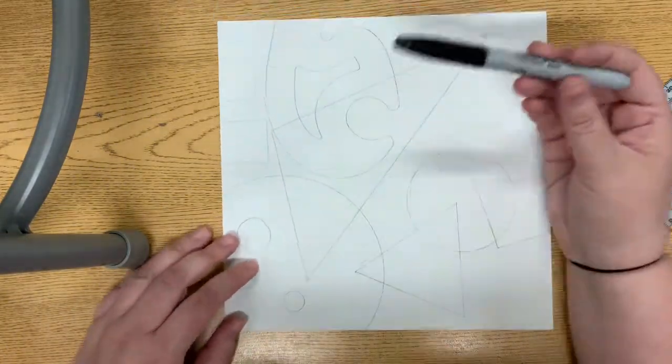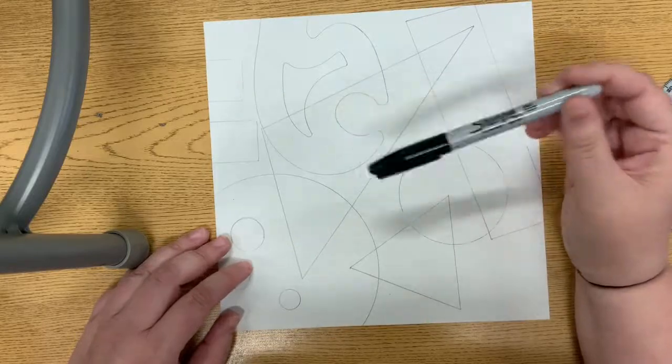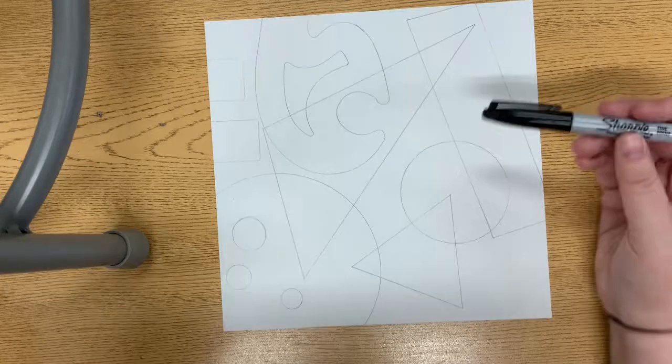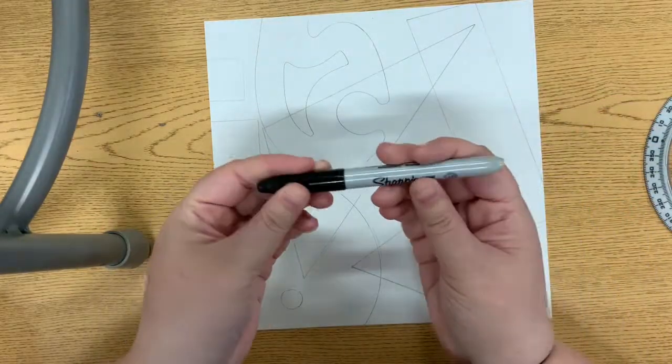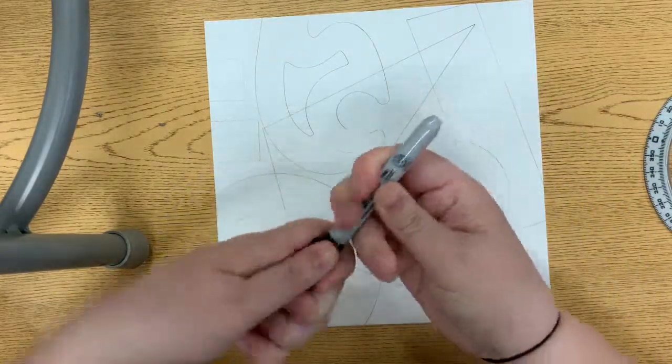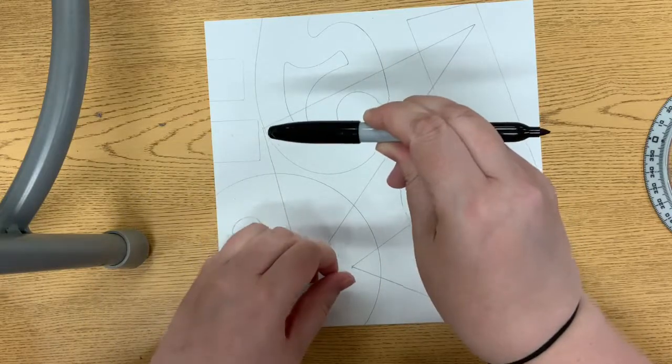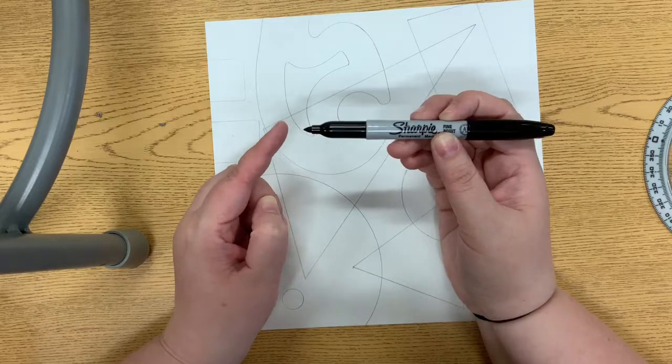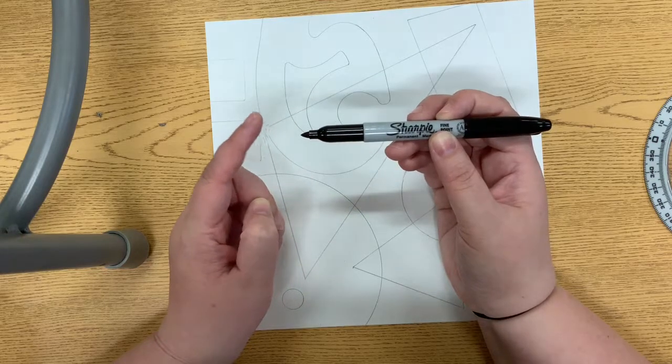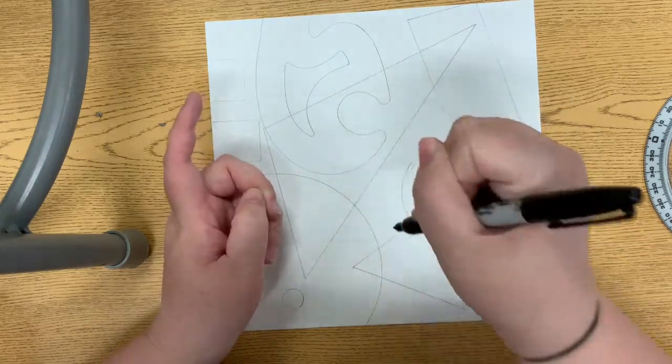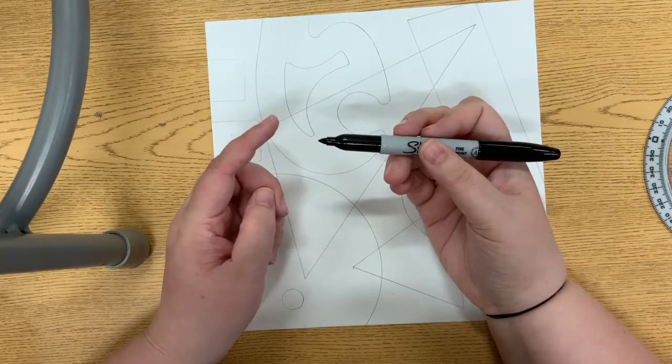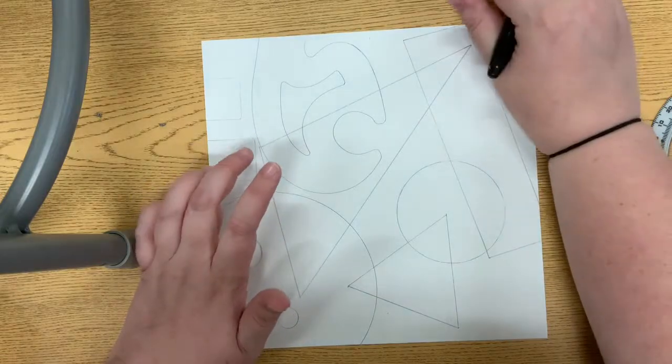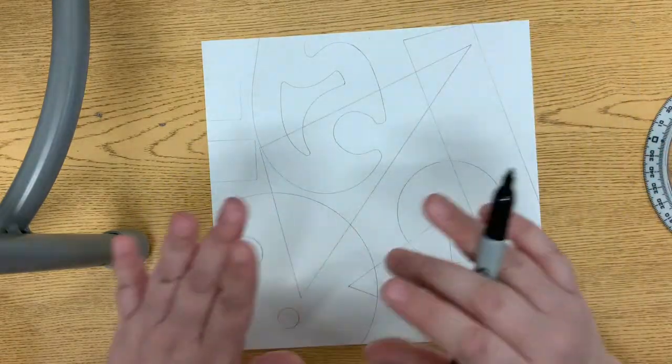Our next job is to use our Sharpie to outline and trace all of our shapes. These Sharpies are brand new - when I take off the cap I stick it on the back. The point of the Sharpie is very sharp, so we want to be gentle. We don't want to push hard. We want to keep our Sharpie on our paper - it does not belong on the table or on ourselves.